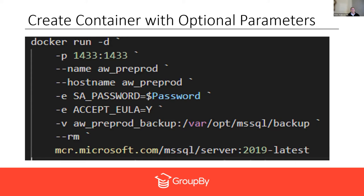If you put database data in a volume, when you start a new container it can automatically connect to that volume and pick right up where the other container left off. A great use case: you could be running one version of SQL Server, type 'docker stop', then 'docker run' to bring up a new container with all security patches installed — in one minute you've upgraded your SQL Server. That's part of what Kubernetes really brings with container orchestration.